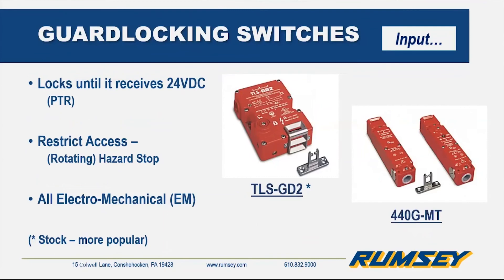Here are guard locking switches. These are very similar to the tongue switches we just saw, but internally these have a locking solenoid. You would send it a signal — 24 volt DC or maybe 120. You can get these in power-to-release or power-to-lock configurations. These are really used for if you have some sort of rotating hazard or something that takes a while to come to a stop — maybe 10 or 20 seconds. You would leave this switch locked for that time to keep people out of the hazard. Once the machine has come to a full stop, you send a signal to the solenoid, it unlocks and they can gain access.